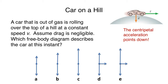In any uniform circular motion, the acceleration points towards the center of the circle — in this case downward. Just like with a spinning tetherball, the velocity is tangent to the circle, but there are no forces tangent to the circle, only towards the center.